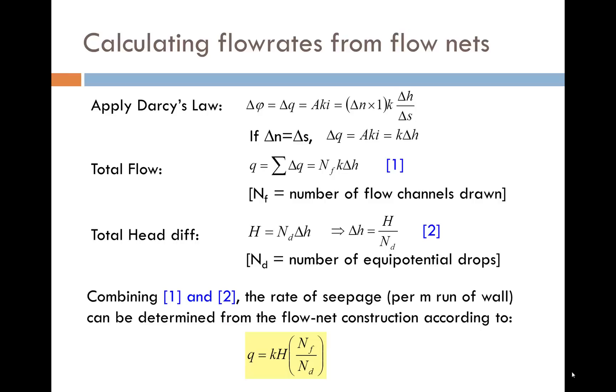If we have a flow rate from a constructed flow net, we need to derive a formula that we can use. Darcy's law gives that the change in flow in one channel, delta Q, is Aki. The area A is delta N, the width of the flow channel, times one metre into the page, times K, times delta H over delta S. Delta N and delta S are the same, so they cancel on account of the curvilinear squares.